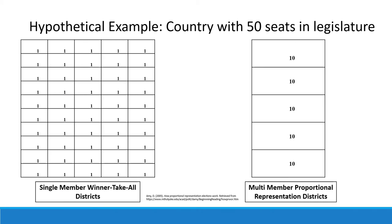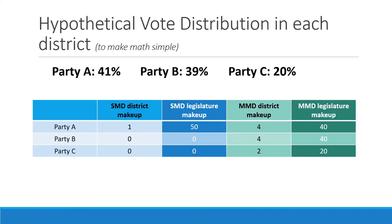This is a little bit confusing, so let's break it down with an oversimplified example. A shout out to Professor Douglas Amy at Mount Holyoke College who came up with the math of this example — it's definitely oversimplified. Imagine a country that has 50 seats in its legislature. If they chose a single-member winner-take-all system, they would have 50 districts, each electing one representative. If they chose a multi-member proportional representation system, they might divide into five districts, each with 10 members elected from that district.